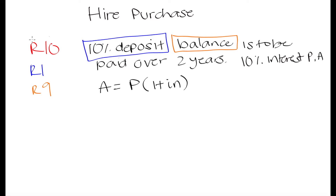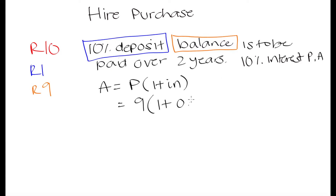Our principal is not R10 because we have already paid R1, so our new principal is R9. Interest is calculated only on that R9, which is why it is simple interest — simple interest is interest calculated only on the initial amount owed. So that is our P. We have 9 multiplied by 1 plus 0.1, which is our interest rate as a decimal, multiplied by 2 years. If you put this into your calculator, you get 10.8 — so you are going to have to pay R10.80 at the end of those 2 years.